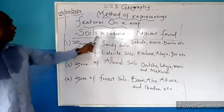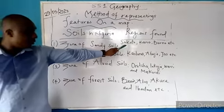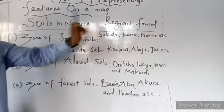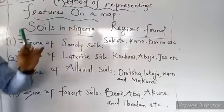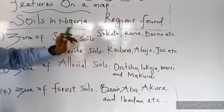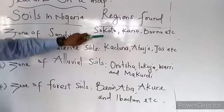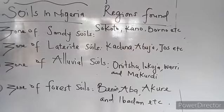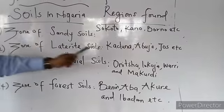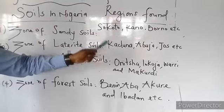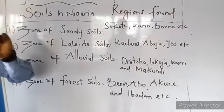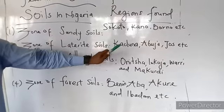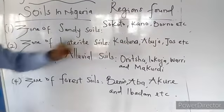For sandy soil, they are found in Tsukutu, Kang, and so on. This means that they are in other regions; however, the majority of them are found in these regions. Zone of lateral soil — they are found in Kaduna, Abuja, and Jos, though they are found in other regions too, but the majority are found in these ones.